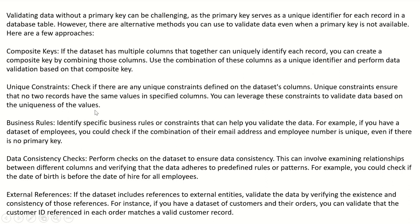The third approach is business rules — identify specific business rules or constraints that can help you validate the data. For example, if you have a dataset of employees, you could check if the combination of their email address and employee number is unique, even if there is no primary key. The fourth approach is data consistency checks — perform checks on the dataset to ensure data consistency, examining relationships between different columns and verifying that the data adheres to predefined rules or patterns. For example, you could check if the date of birth is before the date of hire for all employees.